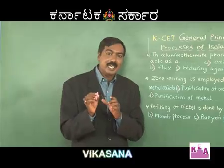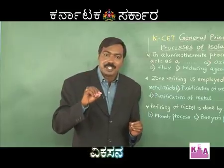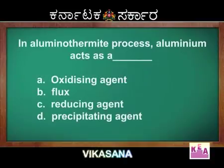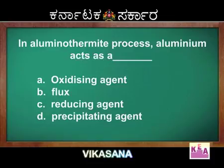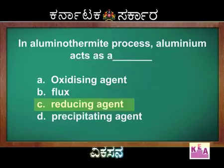The Aluminothermite process is that in which aluminium is used as a reducing agent. In this question, aluminium acts as — option A: oxidizing agent; option B: flux; option C: reducing agent; option D: precipitating agent. Option C, reducing agent, is the right answer. Aluminium is specifically used in the reduction of oxides of chromium and manganese.